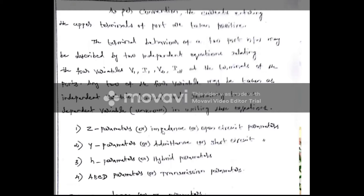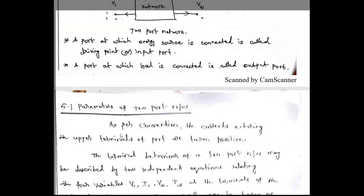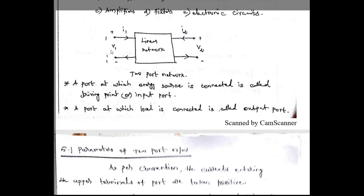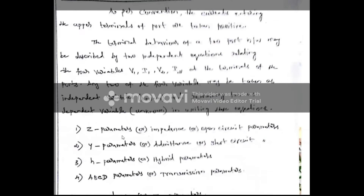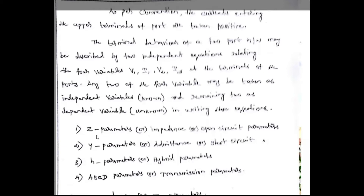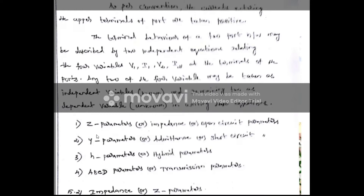The basic idea behind these parameters: in a two-port network there are four variables — input voltage, input current, output voltage, and output current. In each parameter method, two variables are taken as independent variables and the other two as dependent variables, and two equations are written accordingly.